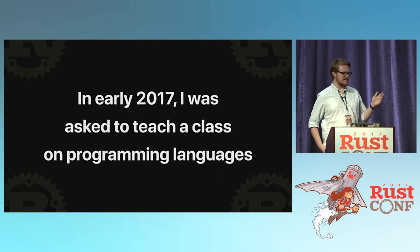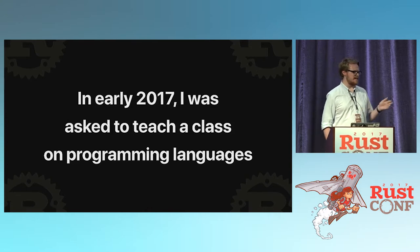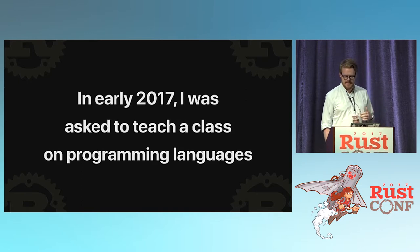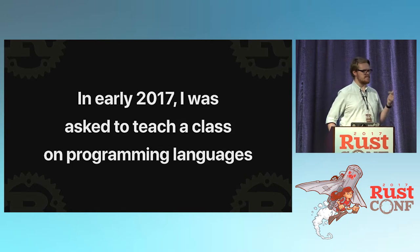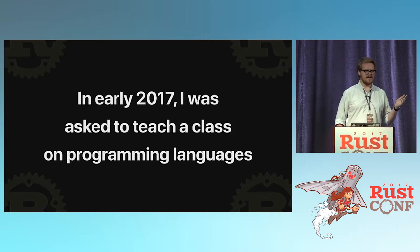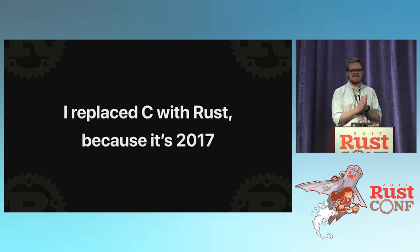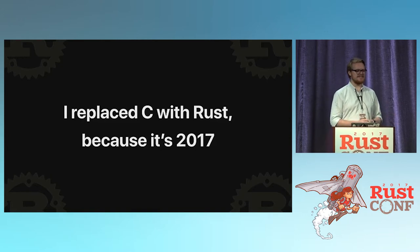They basically had an extra section and needed someone to cover it, and asked me if I would do it, and I said sure. Normally the class is done with four languages — usually Lisp, C, Java, and Prolog — and I decided to replace the C with Rust because it's 2017 and the class has been around for decades. C is fine, but I wanted to replace it with Rust — why not?